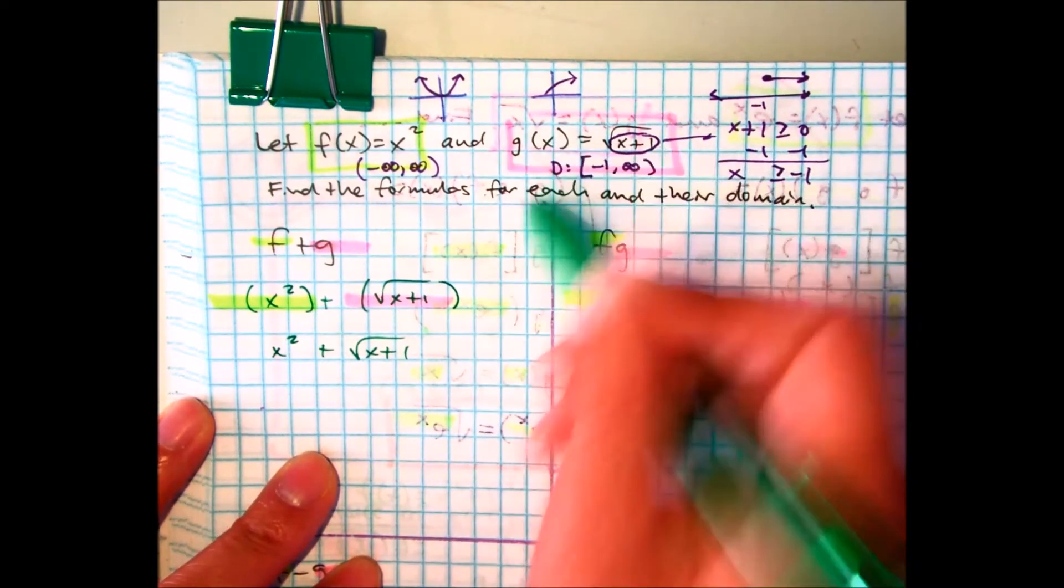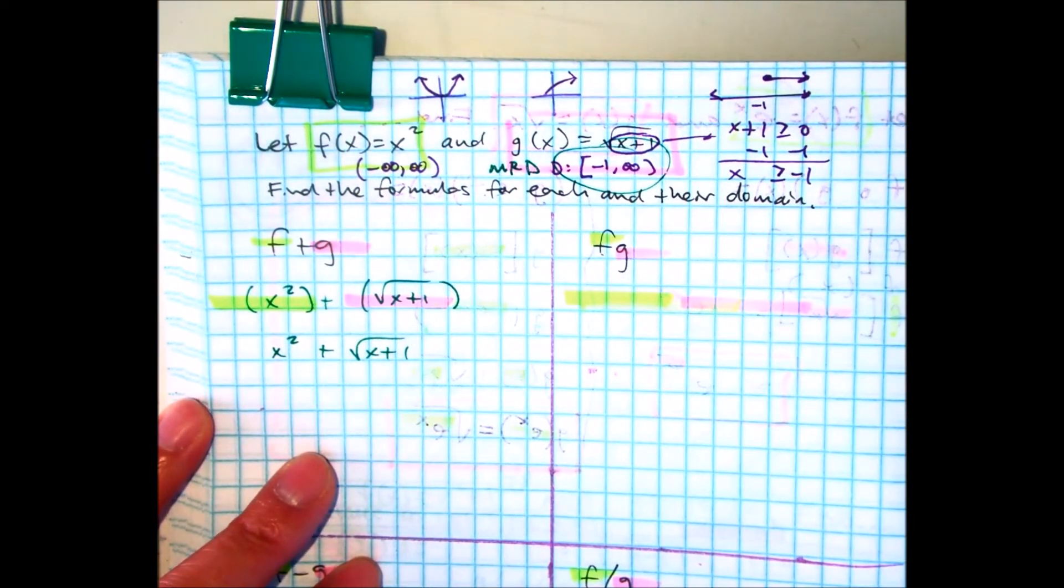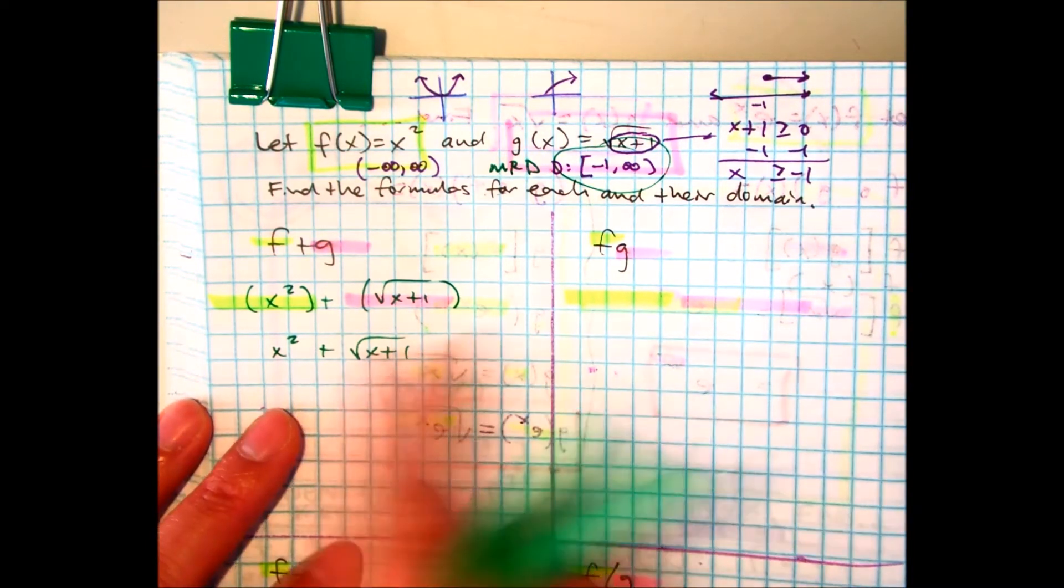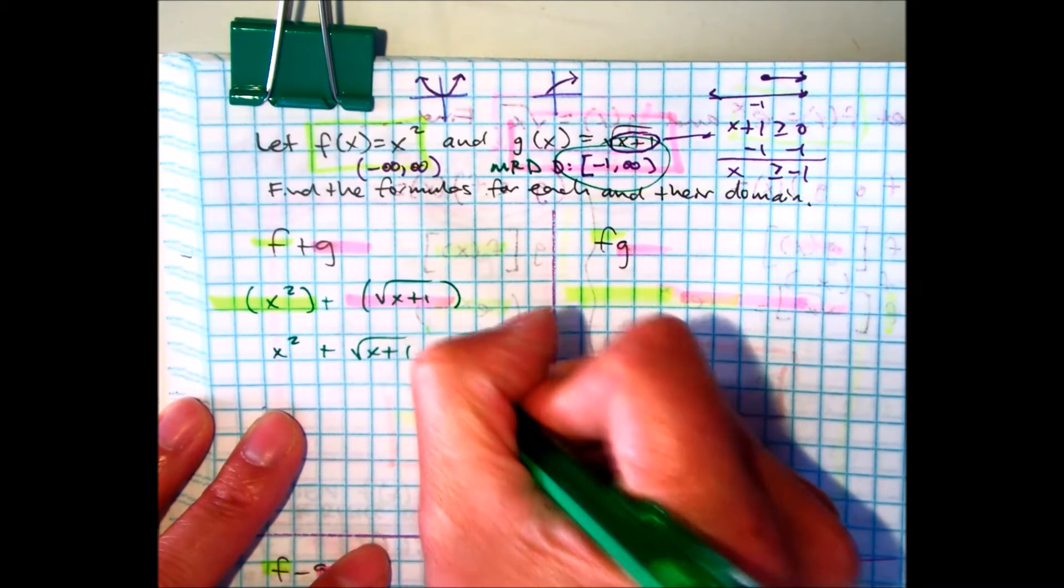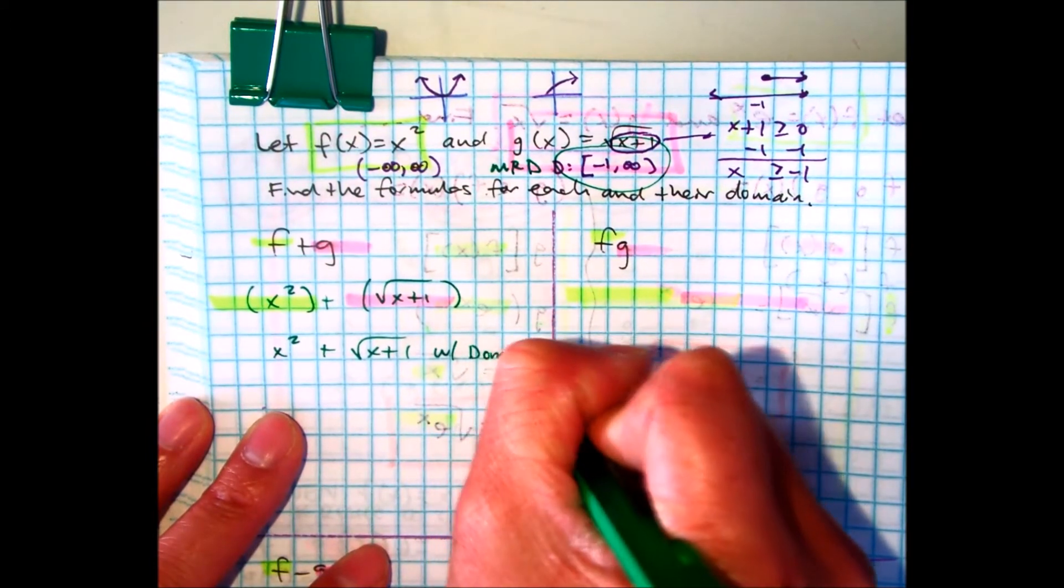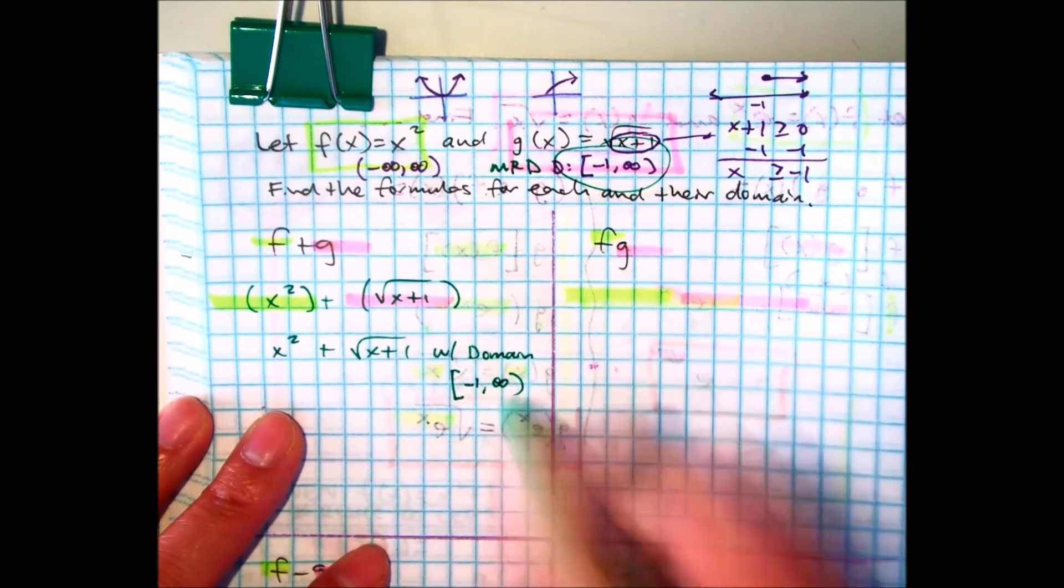You can write that. M, R, D. Klaus, what does that stand for? Domain. We started talking about that yesterday. So, when I'm picking these, I have to pick the one that's most restrictive. That's this one. So, you can write with domain of negative 1 to infinity. Okay? And that's my answer.